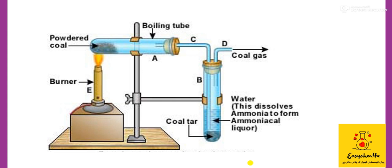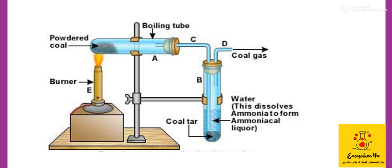This is the diagram for destructive distillation of coal. One important condition of destructive distillation we have not yet discussed — the most important condition — is that we heat the coal in the absence of air at a very high temperature. This is a lab demonstration of how we would carry out destructive distillation in the laboratory, but actually it is done at the industrial level.